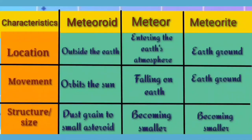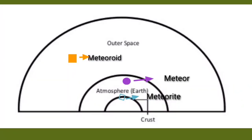The location of a meteoroid is outside the Earth; its movement is orbiting the Sun; and its structure or size is similar to small asteroids. The location of a meteor is entering the Earth's atmosphere; its movement is falling toward Earth; and its structure or size is becoming smaller. The location of a meteorite is on the Earth's ground; and its structure or size continues becoming smaller. In the diagram, the square represents a meteoroid found in outer space, the circle represents a meteor found in the atmosphere, and the diamond represents a meteorite found in the crust.